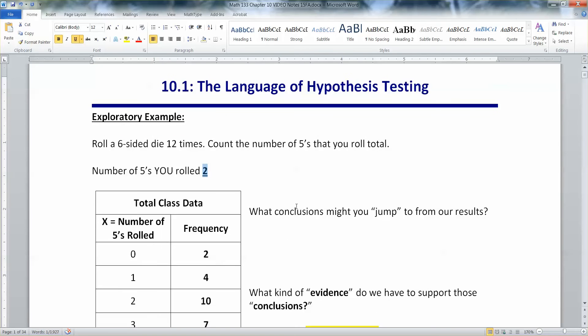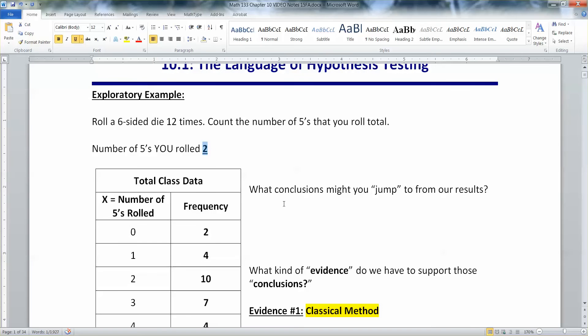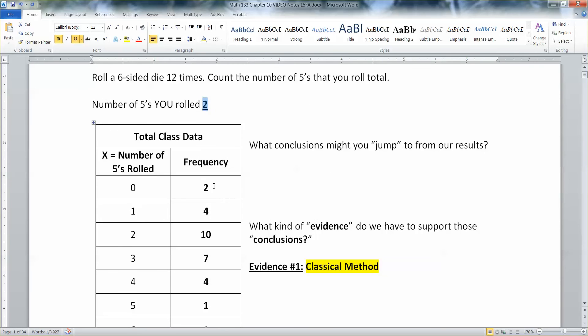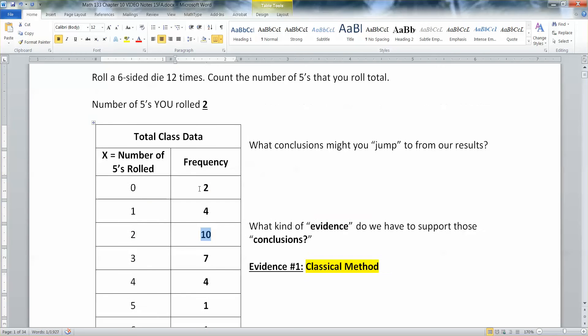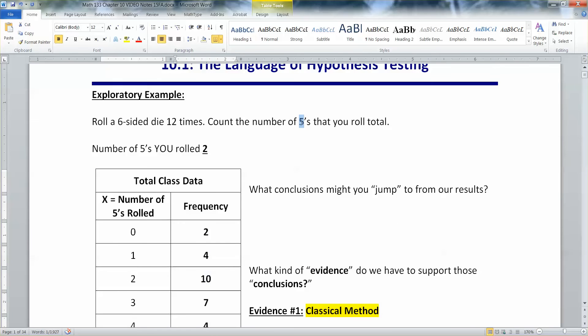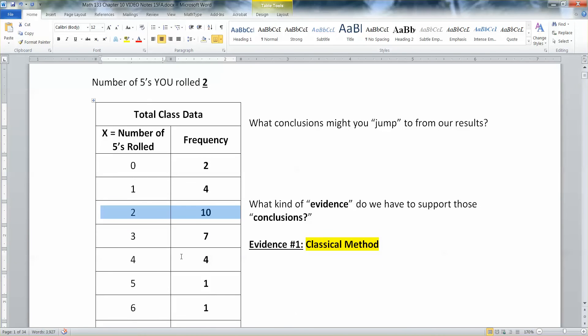And then I had a class of people do this, a classroom full of people do this, and these were the frequencies I got. So I had two students get no fives at all. Then I had four students roll 12 times and they only got one five. Two was the most common, which should not be any shock because the probability of getting a five is one out of six. One out of six times 12 would make two, the binomial mean that we learned in section 6.2.